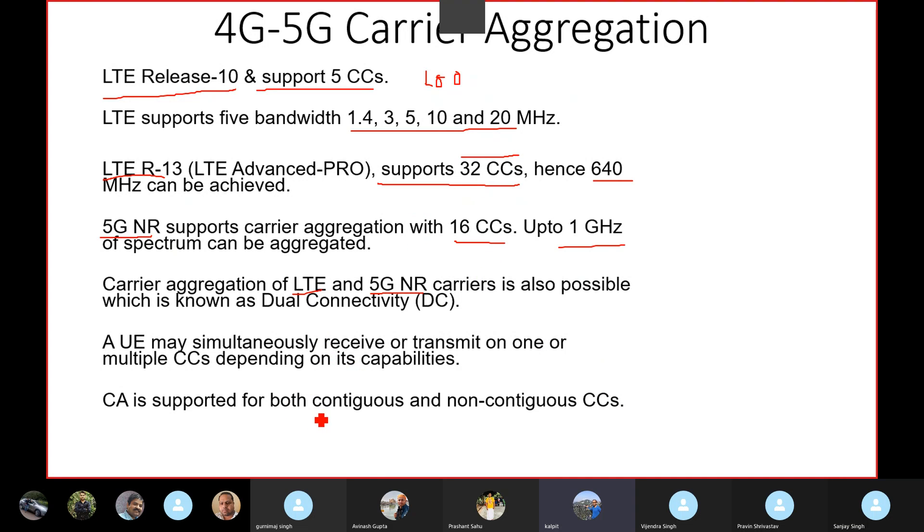No, that's not possible because we are using the same eNodeB, gNodeB and same EPC. So for 2G, 3G, we need to go through RNC and BSC, which is not possible. Correct. Also, the bandwidth requirement is different in 3G and 4G. Correct.